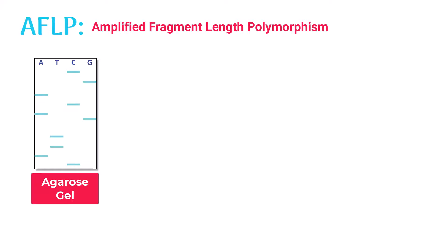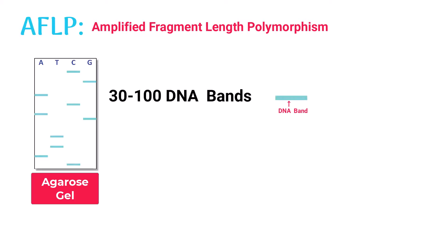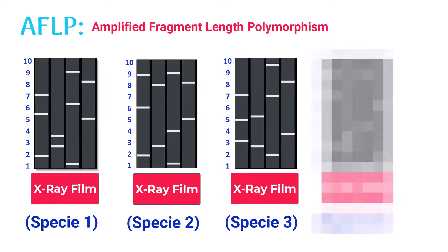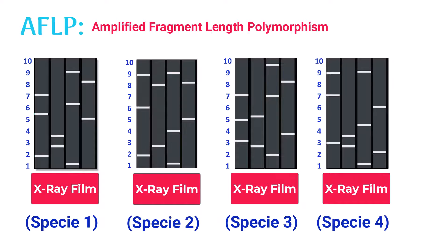AFLP normally produces 30 to 100 DNA bands on the agarose gel. By comparing the band patterns of different species, we can deduce useful information, like revealing the similarities and diversity between different organisms.